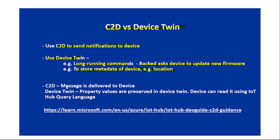Another key difference: in C2D, the message is delivered directly to the device. In device twin, property values are preserved — changes made through property values are stored in the device twin, and the device can read them using IoT Hub query language from the device twin JSON. Again, the Microsoft official link clearly states when to use C2D versus device twin, and I will share it in the description.